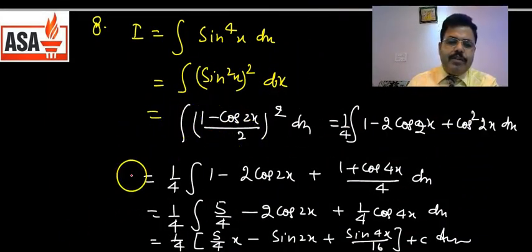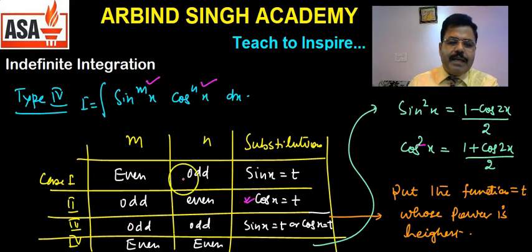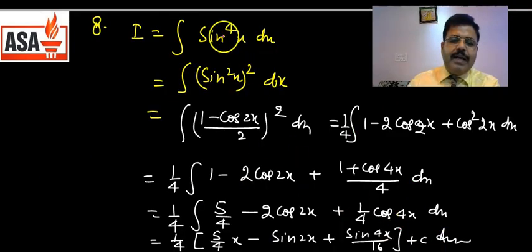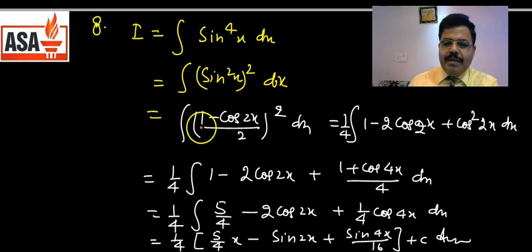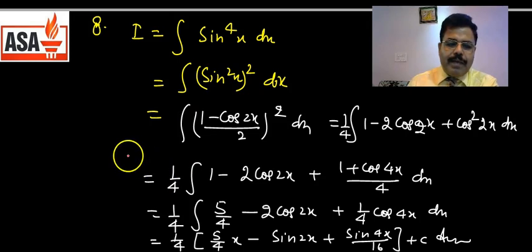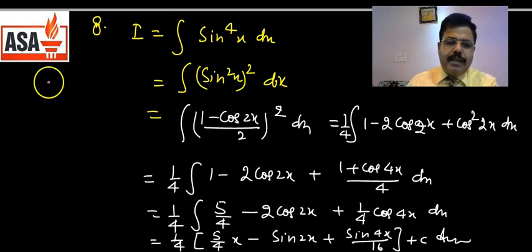यह questions जो हमने पहले slide में बताया — even, odd, odd, even, odd, odd — हर possibility हो सकती है। इन चारों possibilities को solve करने के लिए हर एक type का एक example हमने बता दिया। और जब यह situation आएगी, वैसे आप इसको solve कर पाएंगे।